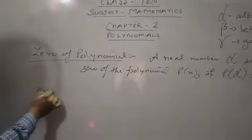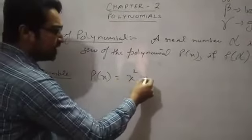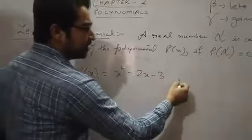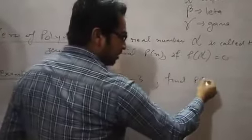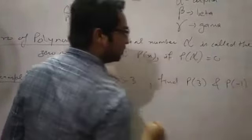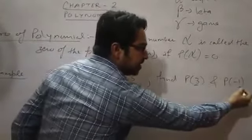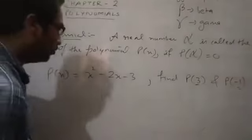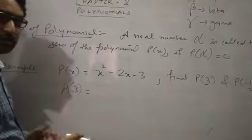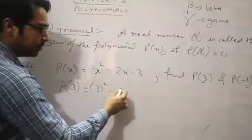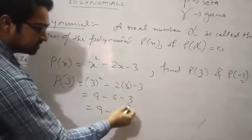Let us take an example. Consider a polynomial P(x) = x² - 2x - 3. We have to find the value of P(3) and P(-1). These 3 and -1 are the types of alpha. First, find P(3): put x = 3, so we get 3² - 2×3 - 3 = 9 - 6 - 3 = 0.